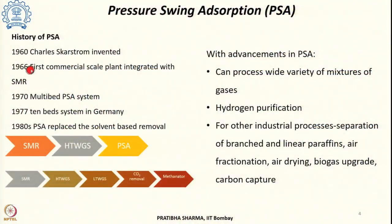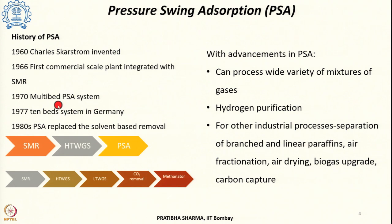Looking at some background: the process was invented by Charles Skarstrom, who came up with a 4-step cycle. In 1966, the first commercial-scale PSA plant with 4 steps and a tail gas drum was integrated with steam methane reforming. In 1970, the multi-bed PSA system was installed. In 1977, a system with 10 beds was installed in Germany.